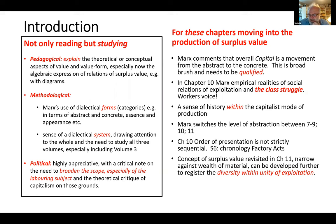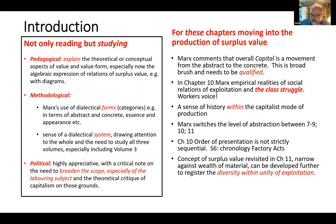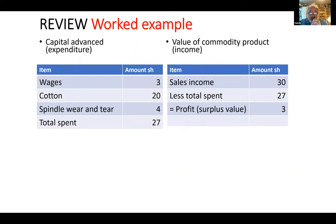Chapter 11 switches back to the theoretical conceptualization. The narrative in Chapter 10 is not strictly sequential — if you want a clear chronology, Section 6 is the clearest, covering the succession of different factory acts over about a 25-year period. In my interpretation, when Marx returns to the conceptual after examining the wealth of empirical material on class struggle, his conceptualization narrows somewhat and could be developed further to support the diversity he's explained within an overall unity of exploitation.